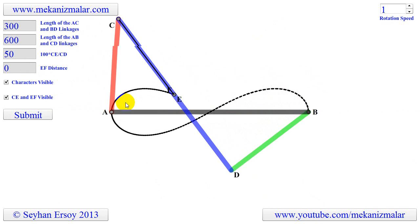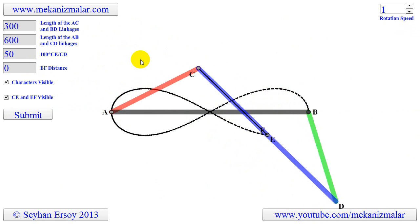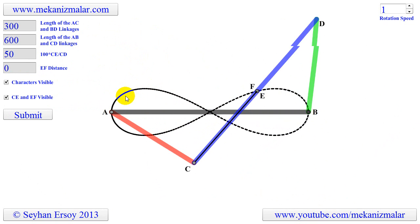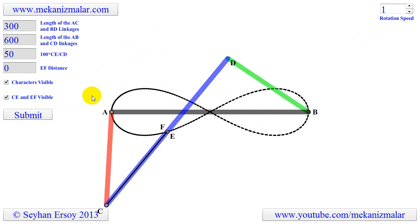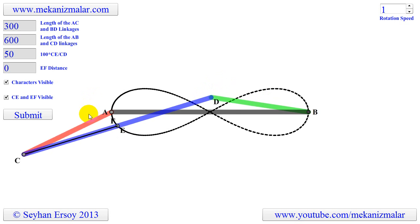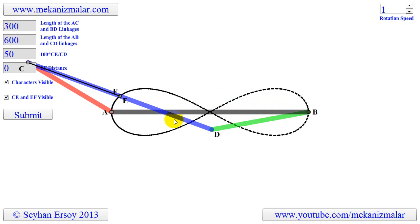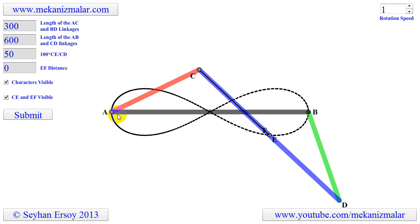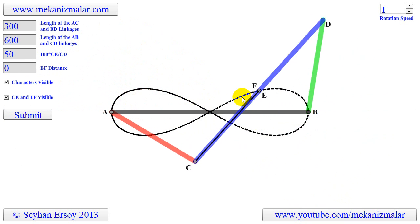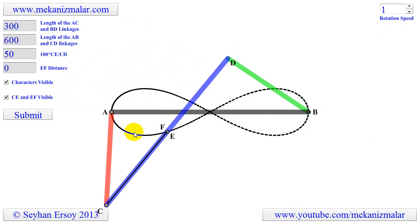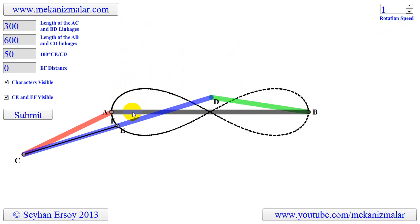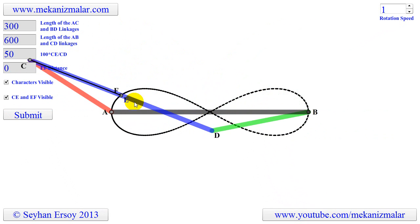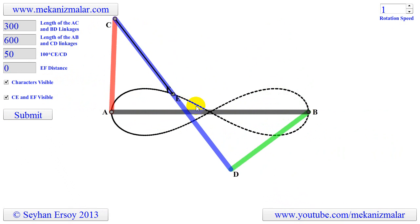In this animation we are going to investigate the coupler curves generated by a special 4-bar linkage. In this linkage, the length of the crank and rocker, as well as the length of the blue and black linkages are equal. Also, the follower is always at the opposite side of the crank with respect to black linkage. In this case the middle point of the blue linkage generates an infinity sign-shaped coupler curve.